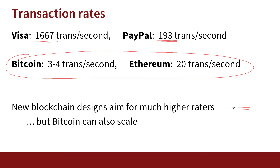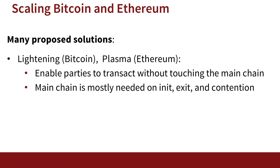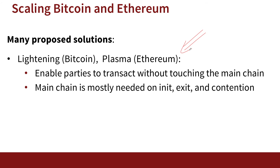There is a lot of work on scaling blockchains. New blockchain designs aim to support much higher rates. But even traditional blockchains like Bitcoin and classic Ethereum can also be made to scale. One example is something called the Lightning Network for Bitcoin and Plasma for Ethereum. This is a quite beautiful idea: most transactions are executed off the main chain. The main Bitcoin or Ethereum chain progresses at its slow rate, but most transactions don't even touch those main chains, so it doesn't really matter if those chains are slow.